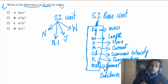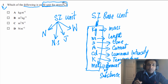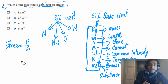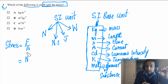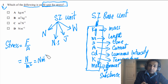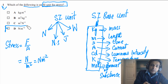Now let's find the SI unit for stress. First, write down the formula: stress equals F over A. The SI unit of force is Newton, and the unit of area is meter squared. So the SI unit for stress is Newtons per square meter. The answer for this question is D.